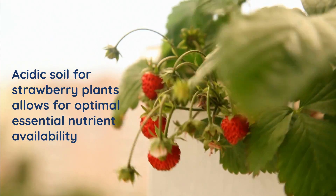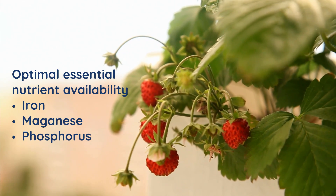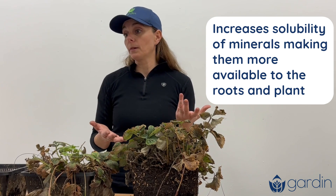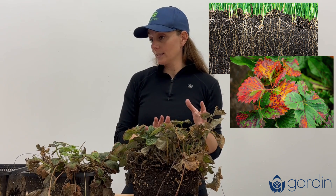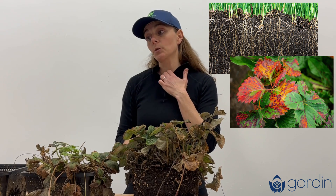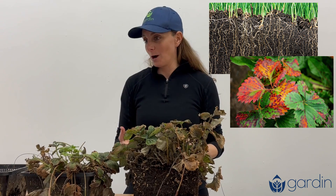Acidic soil enhances the availability of essential nutrients like iron, manganese, and phosphorus — things that the strawberry plant really needs in its growth stage. An acidic soil also increases the solubility of minerals, making them more available to the root structures to uptake and then more available for the plant to use. Soil acidity can also affect the microbial population, and strawberry plants prefer slightly more acidic soil where that microbial population will best thrive. Lastly, soil acidity can help decrease some soil-borne pathogens that don't like slightly acidic soils. So I suspect these plants potentially did not have a slightly acidic soil, which made it difficult for them to pull the nutrients they needed to stay healthy, strong, and fight disease.